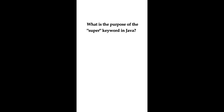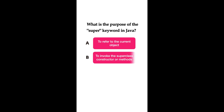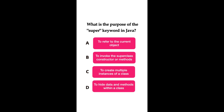Welcome to Java quiz series. Here is one more question: What is the purpose of the super keyword in Java? Option A: to refer to the current object. Option B: to invoke the superclass constructor or methods. Option C: to create multiple instances of a class. Option D: to hide the methods within a class.